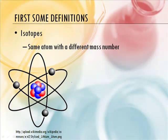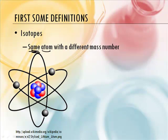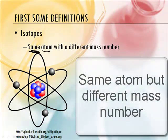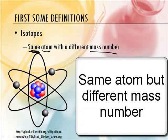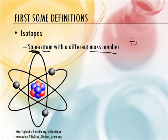Well, here is what an isotope is. Same — there's that word, same. So that's the ISO part. So we have the same atom with a different mass number. Same atom means it has the same number of protons, because a different number of protons makes it a different atom. So tope must mean — I'm going to call tope equal to protons, or the atom. So we're going to learn about isotopes today.